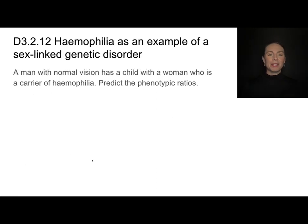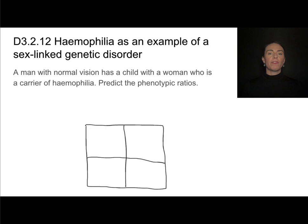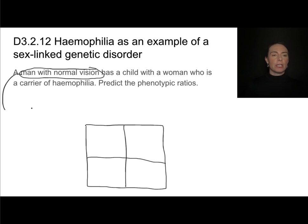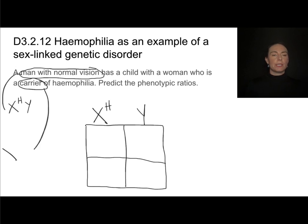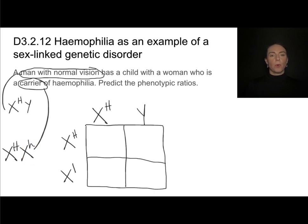Let's do a Punnett square that predicts the outcome of a cross between a male with normal vision and a female who is a carrier. The male with normal vision must have the genotype X with a dominant allele and then a Y. Half of his sperm will have the X chromosome and half will have the Y chromosome. A woman who is a carrier is going to have the genotype X big H, X little h. Half of her eggs will have the X chromosome with the dominant allele and half will have the X chromosome with the recessive allele.